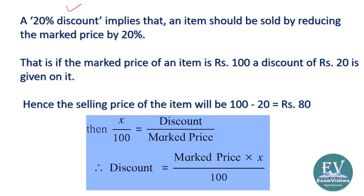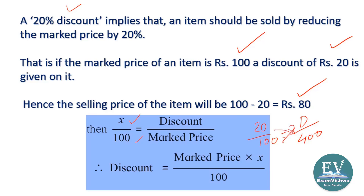If the market price is 400 and discount is 20 percent, let's put it in the formula. How do you calculate the discount? Market price is 400. We cross multiply: 100 into D is equal to 20 into 400. So D equals 20 into 400 upon 100. Cancel — discount equals 80 rupees.